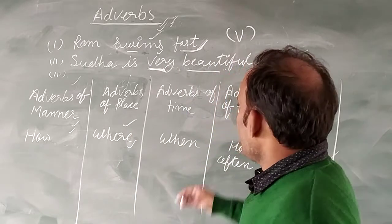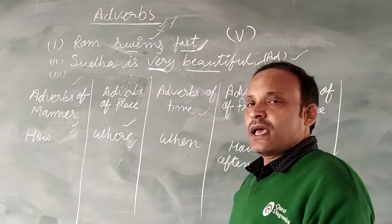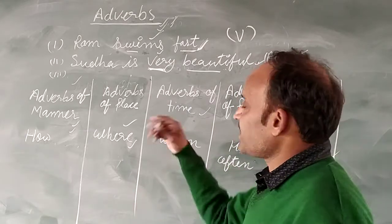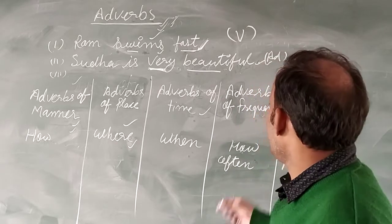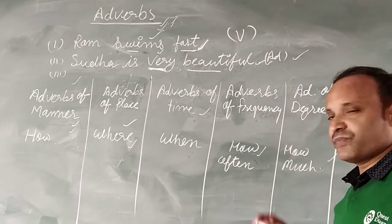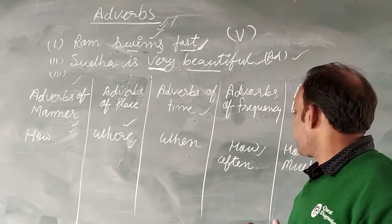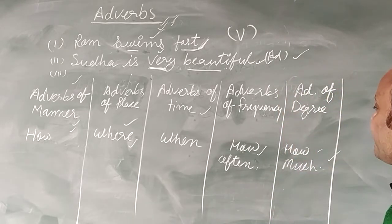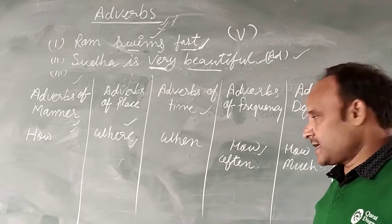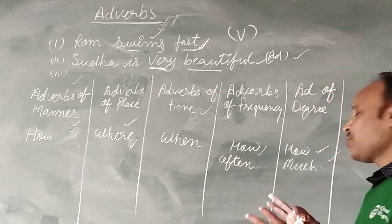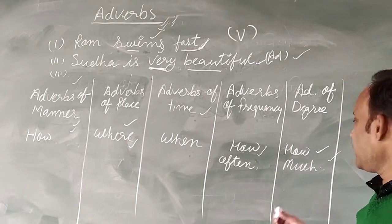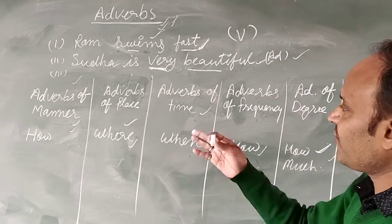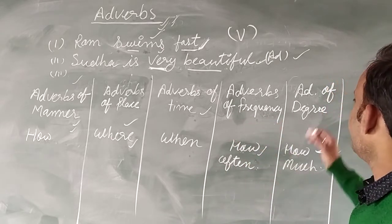Adverb of place tells us about where an action is done. Adverb of time tells us about the time at which the action is done. Adverb of frequency tells us about how often an action is done. And adverb of degree tells us about how much an action is done — its amount or extent.